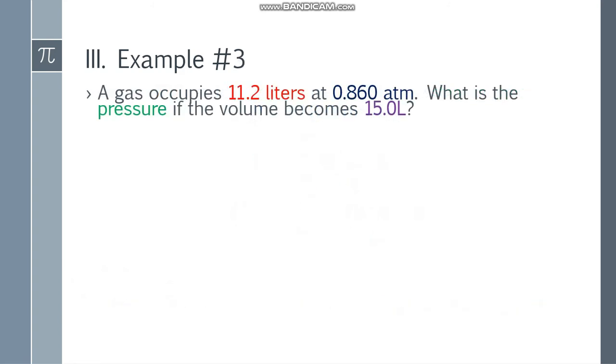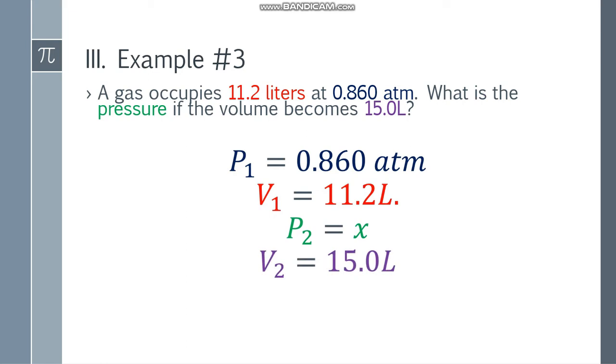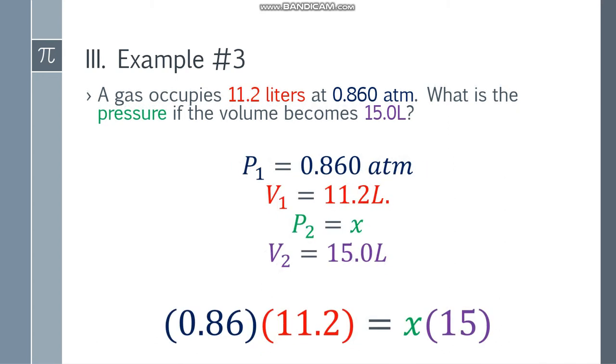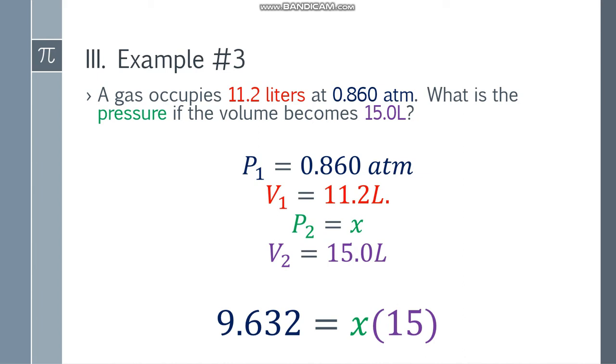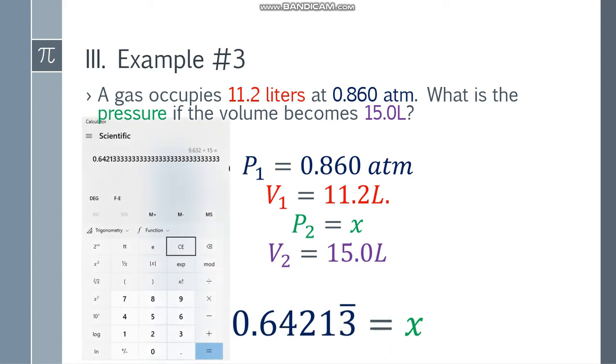Example number 3: A gas occupies 11.2 liters at 0.860 atm. What is the pressure if the volume becomes 15.0 liters? P1 is equal to 0.860 atm, V1 is 11.2 liters, P2 is X, and V2 is 15.0 liters. We're looking for P2. Let's have the formula and substitute the values: 0.86 times 11.2 equals X times 15.